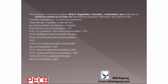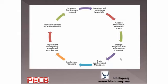If you look at the management cycle, it starts from assessing hazardous material risk, then you need to design physical and procedural controls. After designing the controls, you train workers and managers and then implement the controls. After implementing the controls, you implement emergency response procedures, monitor controls for effectiveness, and improve controls as needed. Inventory all hazardous materials. This is a continuous cycle, and you have to take care of all the steps and requirements to develop an effective hazardous materials management program.